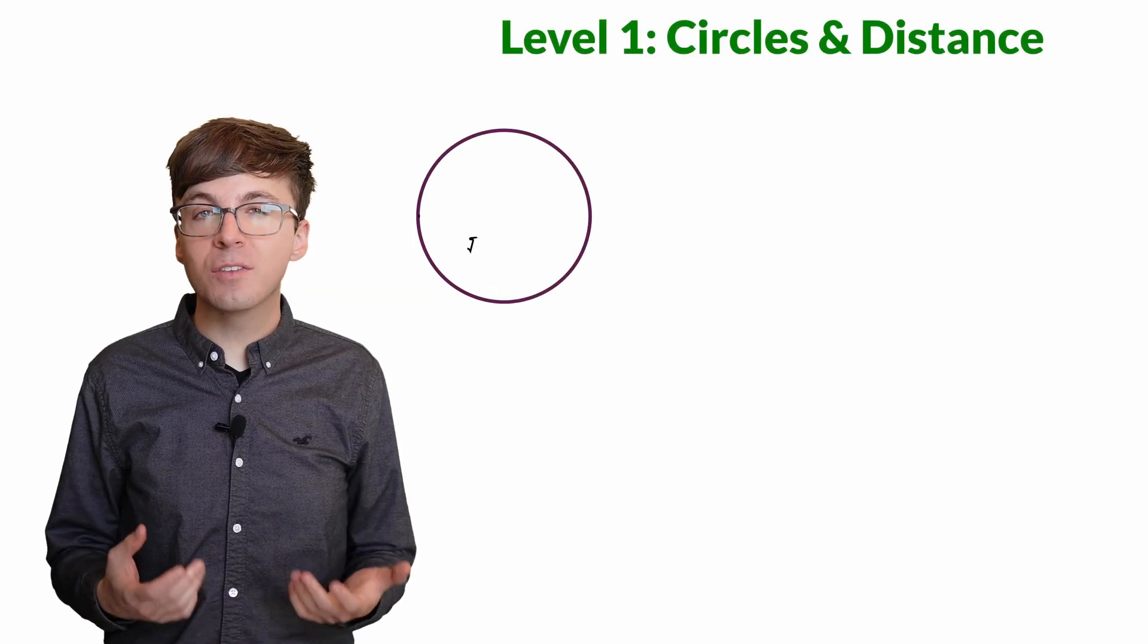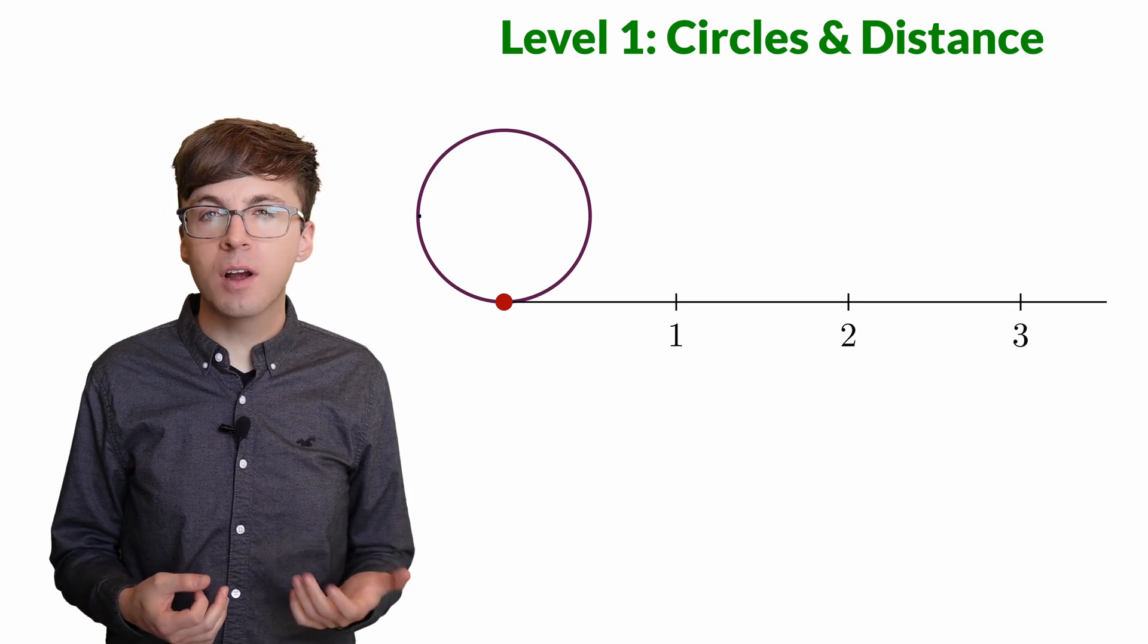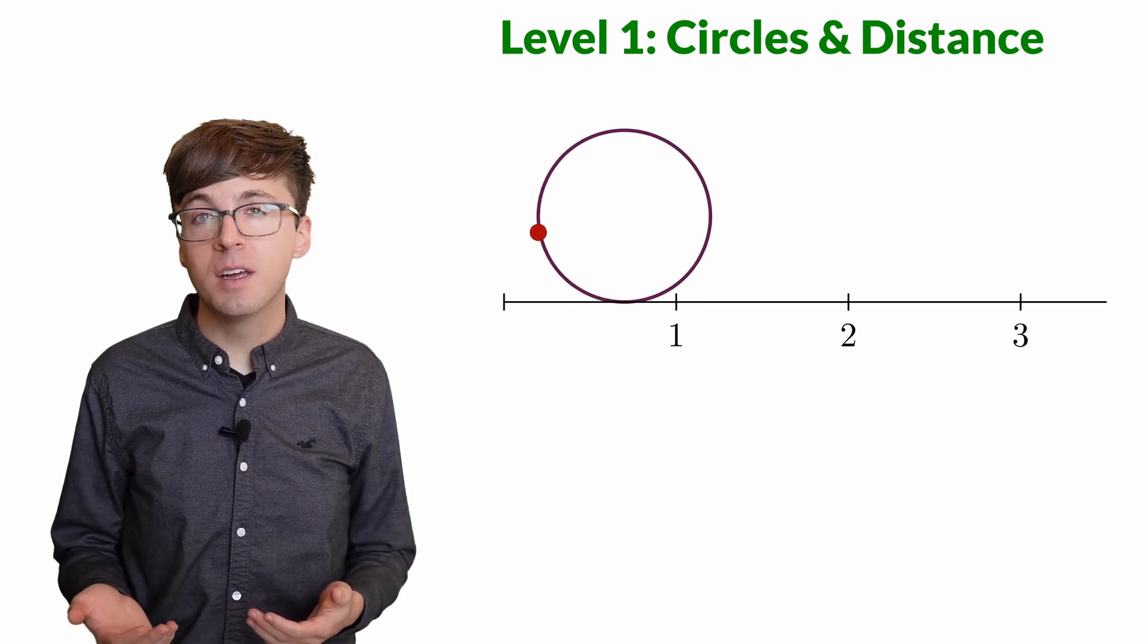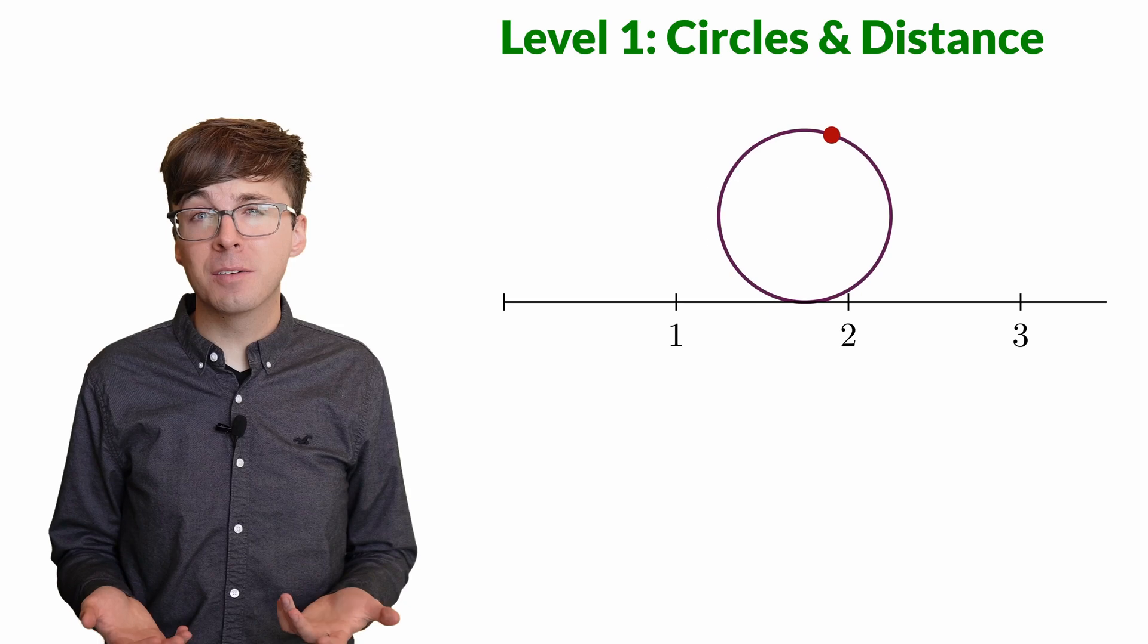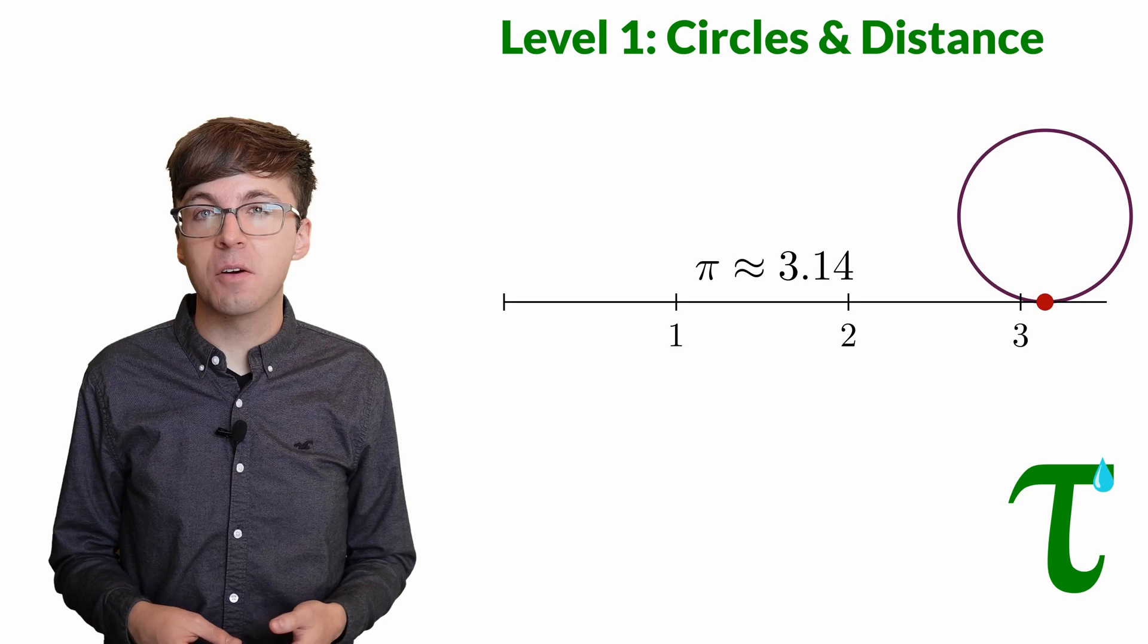For level one, let's look at circles and distance. Pi is defined as the ratio of the circumference of a circle to its diameter. We might wonder if it would be better to divide by the radius instead, but in this video we'll stick with the diameter, sorry Tau.